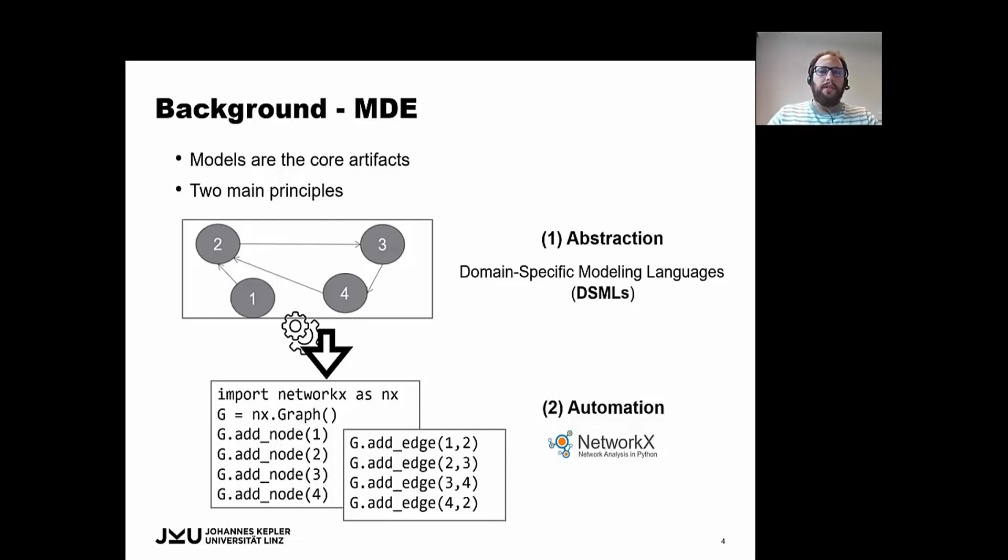So, in this example, our DSML is for creating graph representations. And from this representation, we can generate NetworkX code. NetworkX is a Python package for the creation, manipulation and study of complex networks.